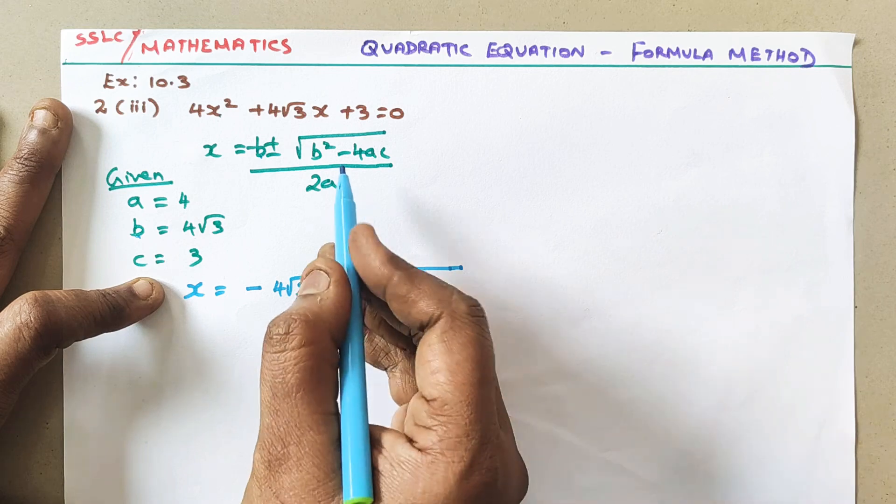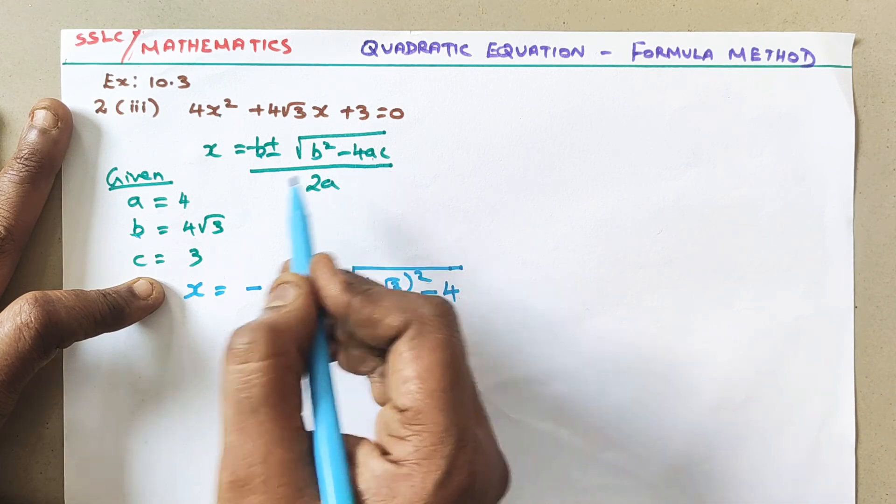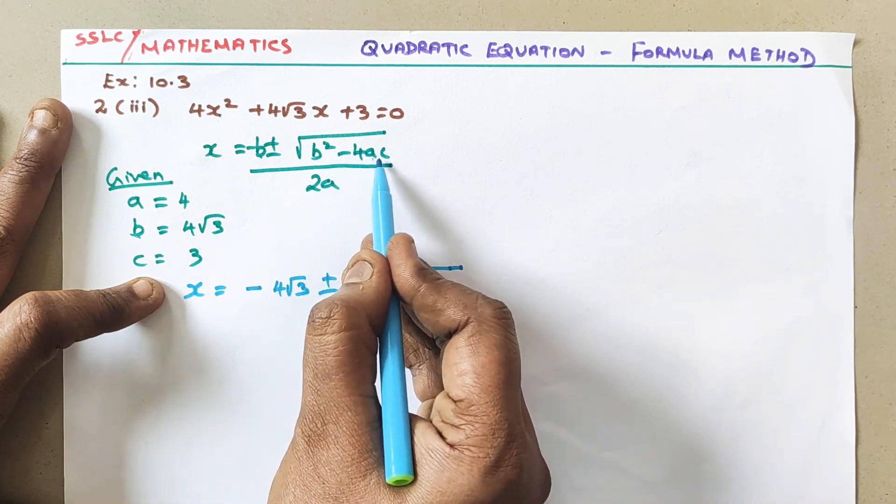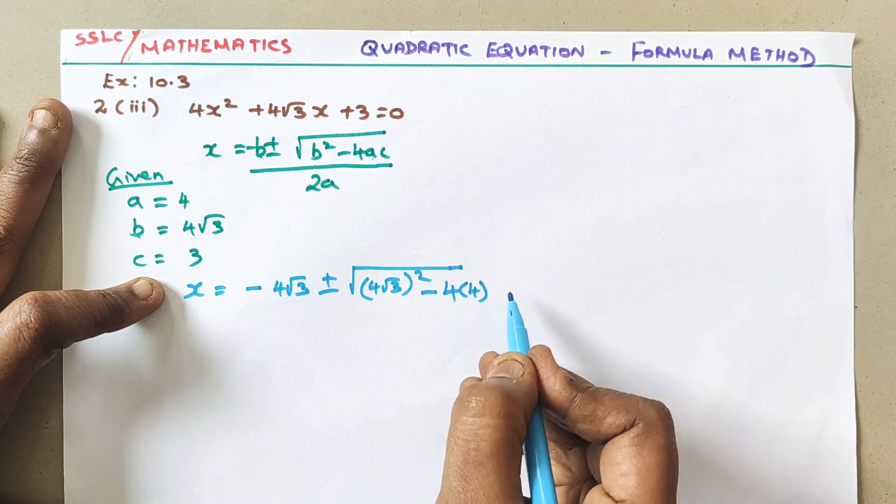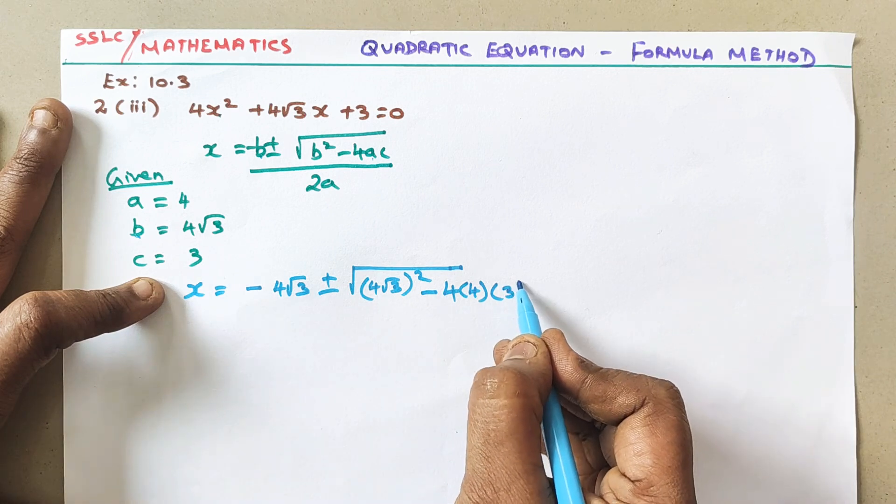Minus 4ac. So write 4. What is the value of a? All are in multiplication. So a, that is ×4, and c ×3.